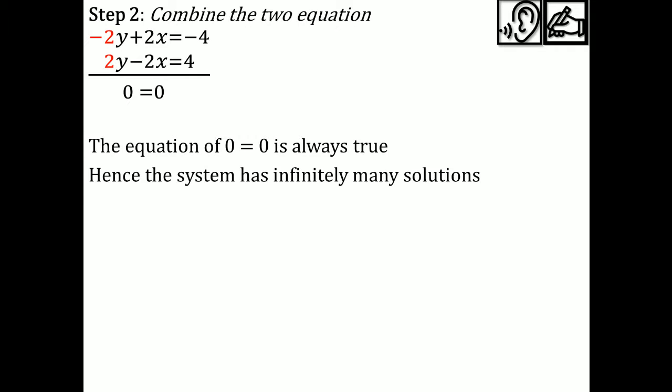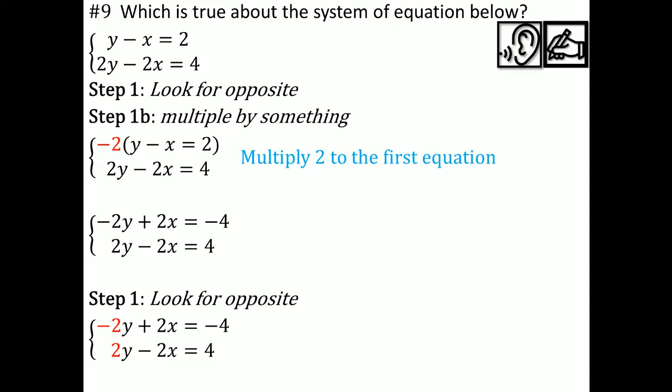Question 10: a system of two linear equations has no solution. The first equation is negative 2x plus 4y equals 1. What could the second equation be to make the system have no solution? Remember the shortcut: can you make the second equation from the first by multiplying?